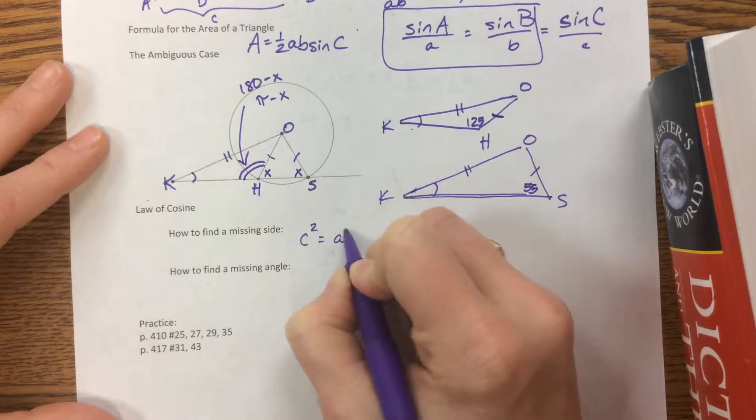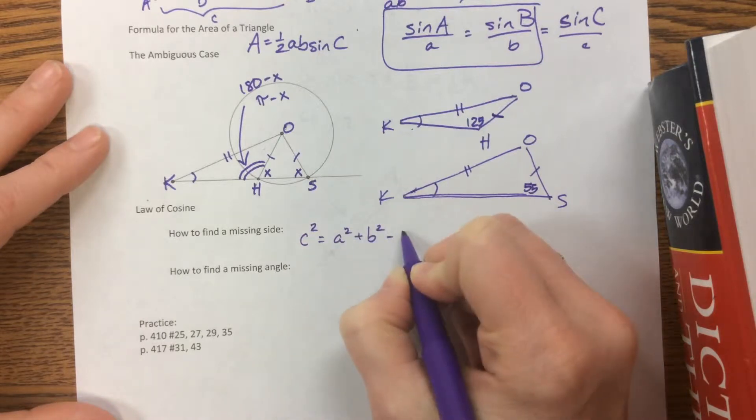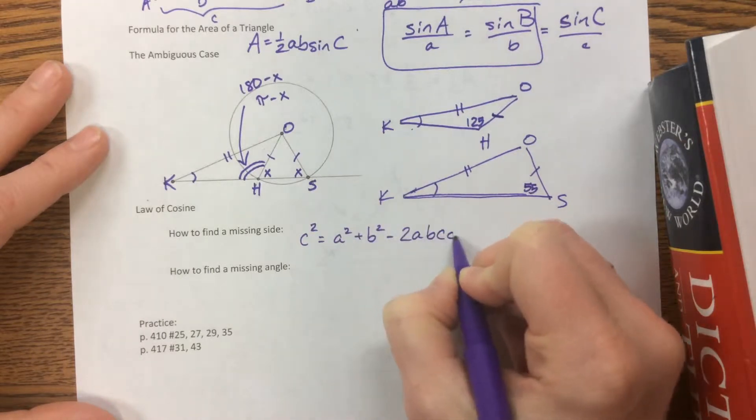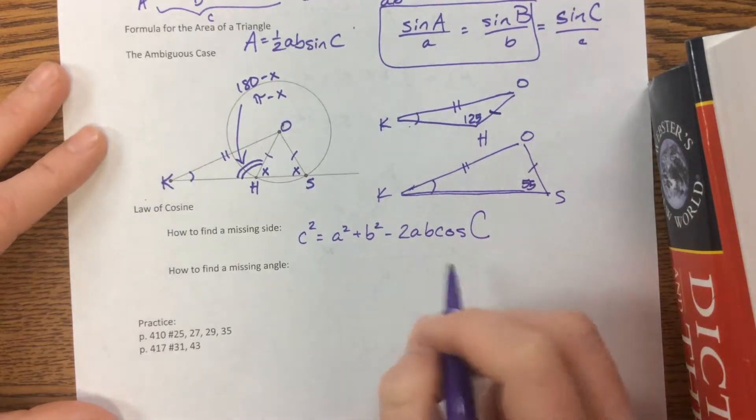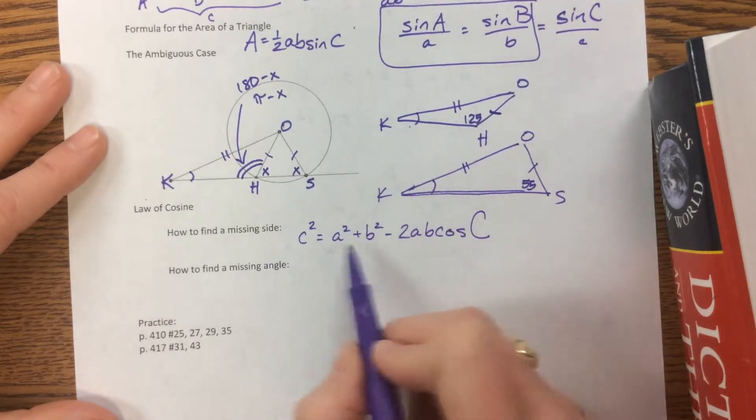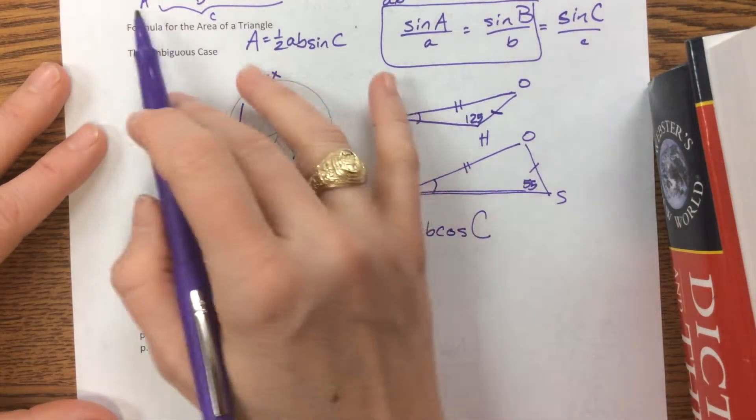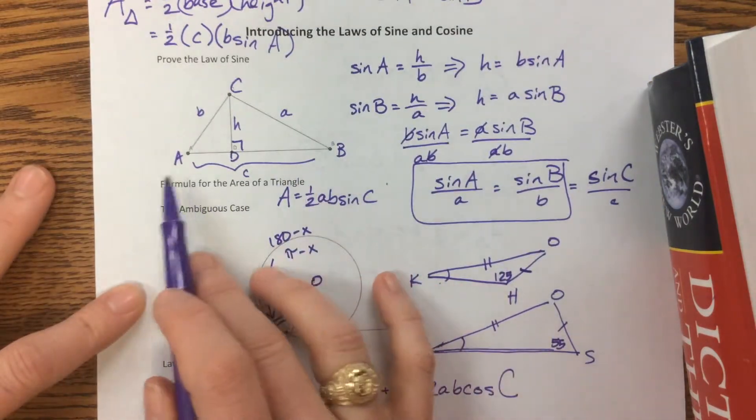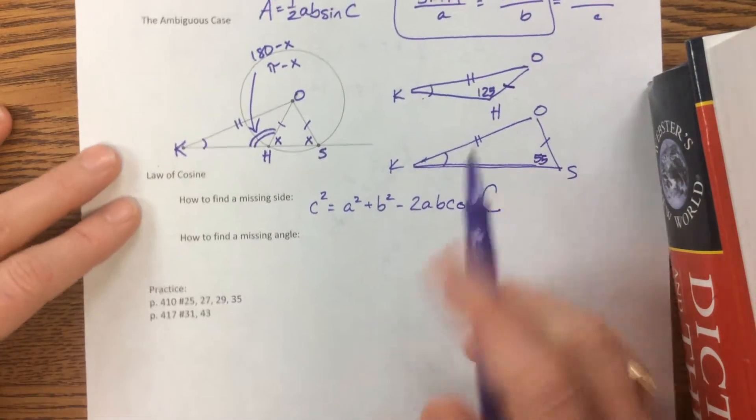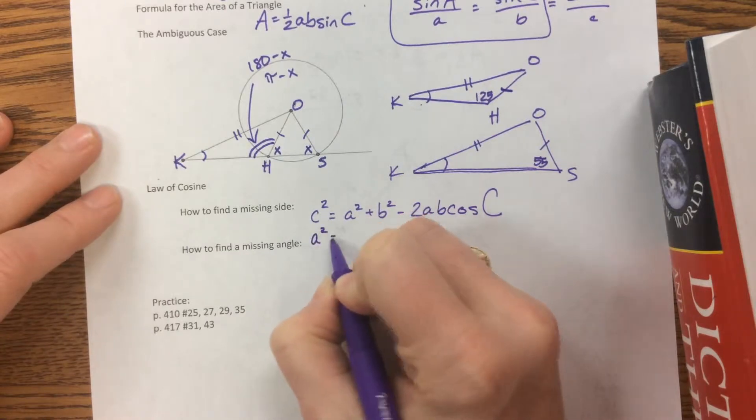And that's c squared equals a squared plus b squared minus 2ab cosine c. And we can take this formula and actually, sometimes you're not looking for side c here. Sometimes you might be looking for a different side. Some books will give you all the possibilities.